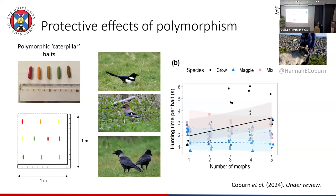Interestingly, the effect was different in different bird species — the black line represents crows. It comes back to the idea of predator psychology being really important. There's the environment on the one hand, and the cognitive abilities of the predators on the other, and this varies among species. In the magpies, there didn't seem to be much of an effect — it didn't matter how polymorphic the populations were, they hunted them in the same amount of time.